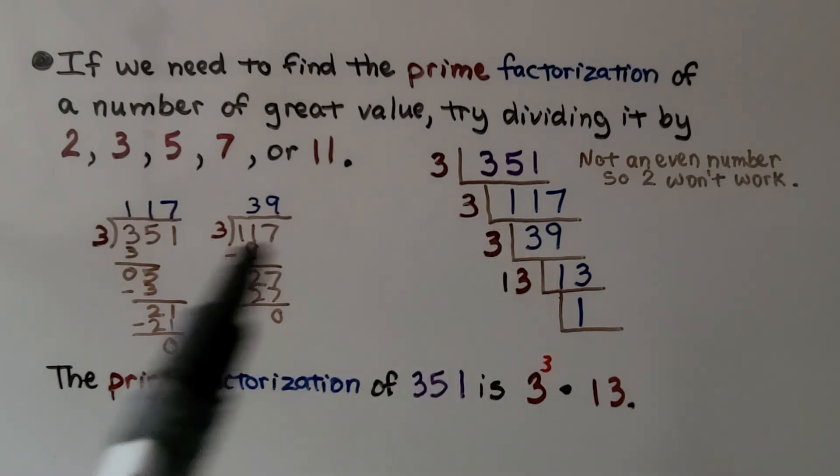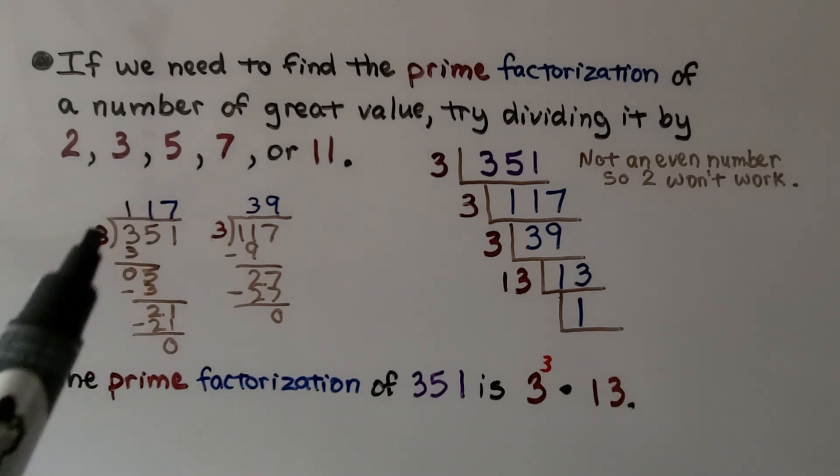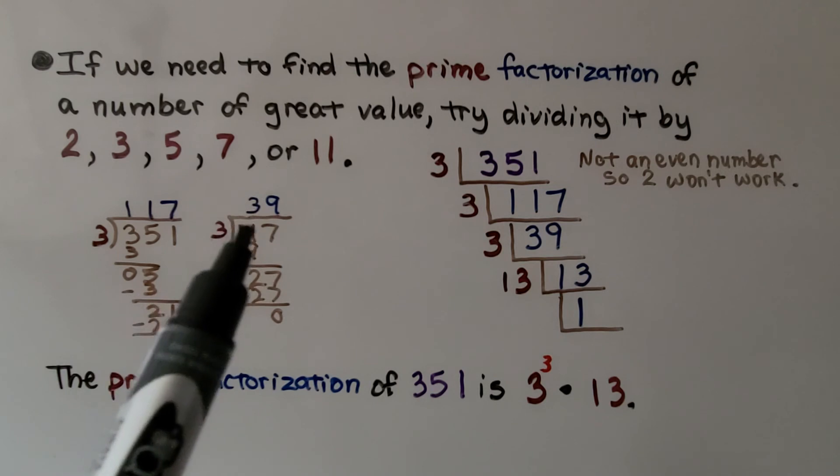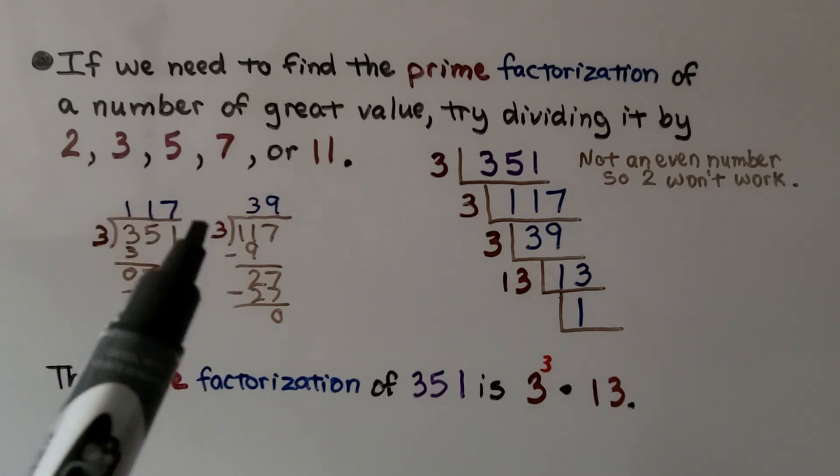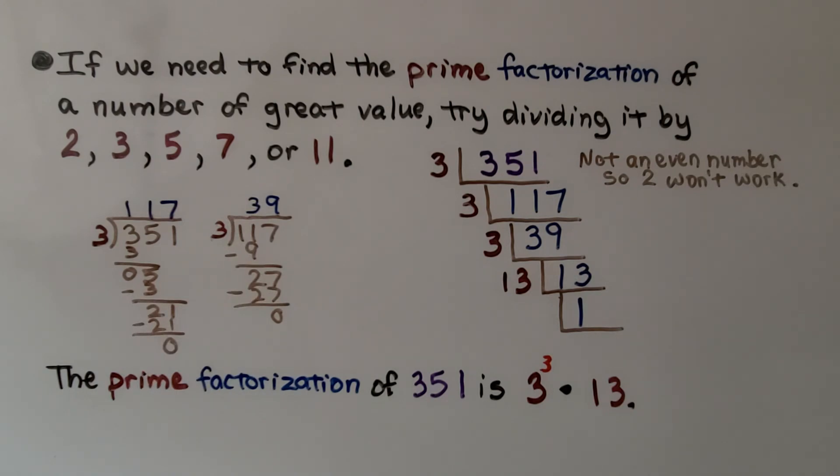And if it's not an even number, go straight to 3 and see how many times that will fit in. If we tried to divide it by 3 and it didn't go in evenly, then I would try dividing it by 5 or 7 or 11. And I would keep trying different prime numbers.